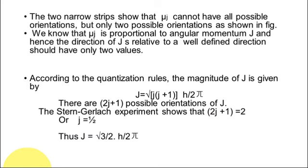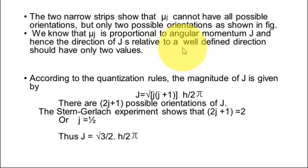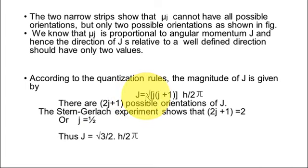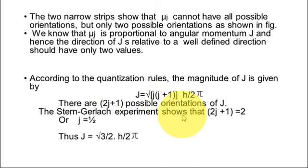The two narrow strips show that μⱼ cannot have all possible orientations but only two possible orientations, as shown in the figure. We know that μⱼ is proportional to the angular momentum j, and hence the direction of j relative to a well-defined direction should have only two values. According to the quantization rules, the magnitude of j is given by j = √(j(j+1)) · (h/2π), and there are 2j+1 possible orientations of j.